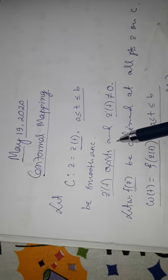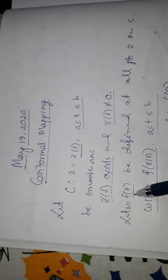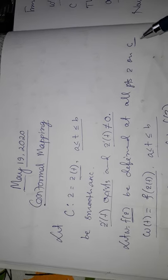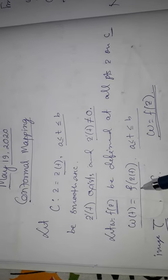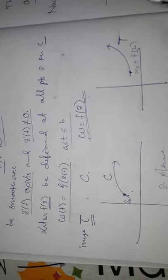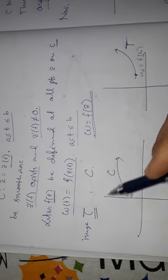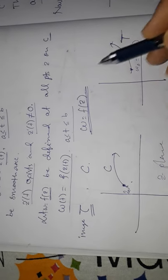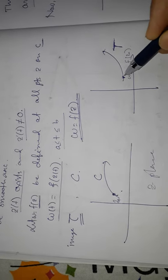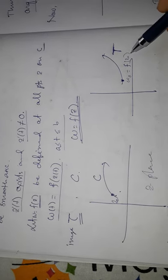A finite number of smooth arcs joined end to end is called a contour. Now let w = f(z), defined at all points z on c. The parametric form of w will be w(t) = f(z(t)). Here c is the smooth arc passing through z₀, and the image of c under the transformation w = f(z) is called gamma, which passes through w₀, where w₀ = f(z₀).